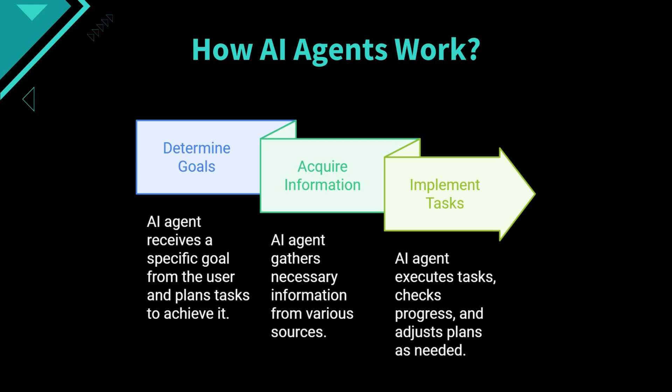How do these AI agents actually work? First, the AI agent receives a specific goal or instruction from the user. It then plans tasks to achieve this goal, breaking it down into manageable actions. Next, it gathers the necessary information — fetching data from the internet, your database, your calendar, or even interacting with other AI models. Finally, the agent executes these tasks, checks off completed tasks, evaluates its progress, and may even adjust its plan based on new information or feedback. All of this happens behind the scenes, making your life easier while you focus on what truly matters.